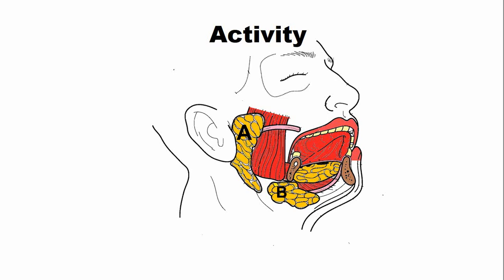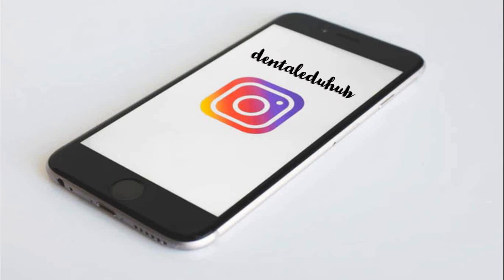Now here is an activity for you: identify the labels A, B, and C — identify these glands and write the type of secretion produced by each of these glands in the comments. Thank you very much for watching. Do give us your feedback. Stay blessed!